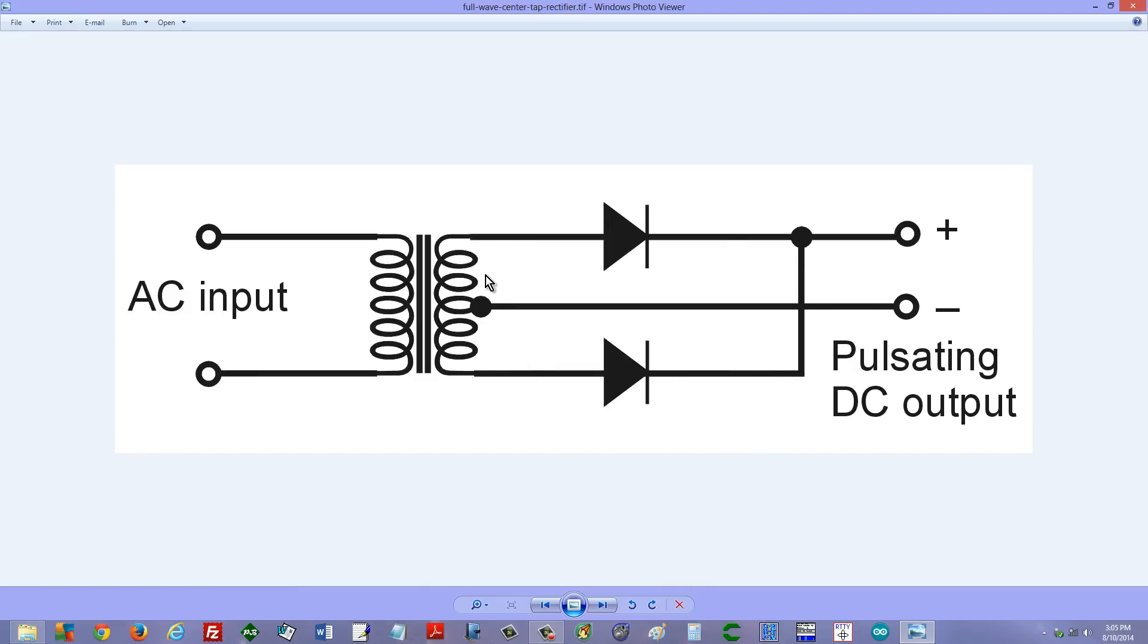Now when the current reverses and flows down like this, we just flip the whole business upside down. The electrons cannot get through this diode, so we see nothing here at the output of this diode. But electrons flowing down like this can still escape from the positive terminal.